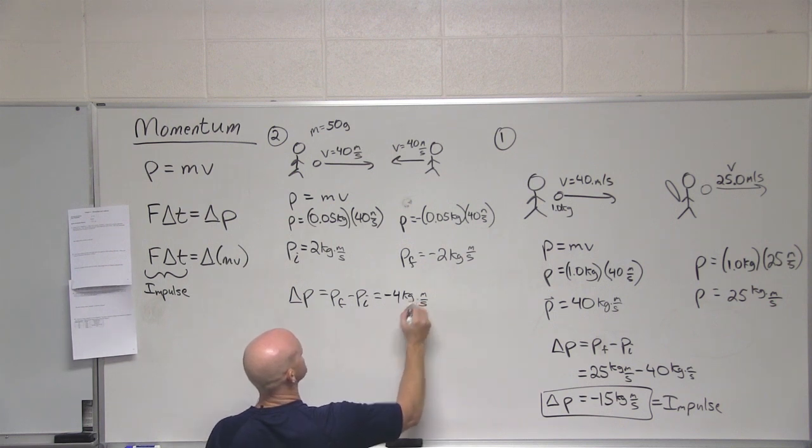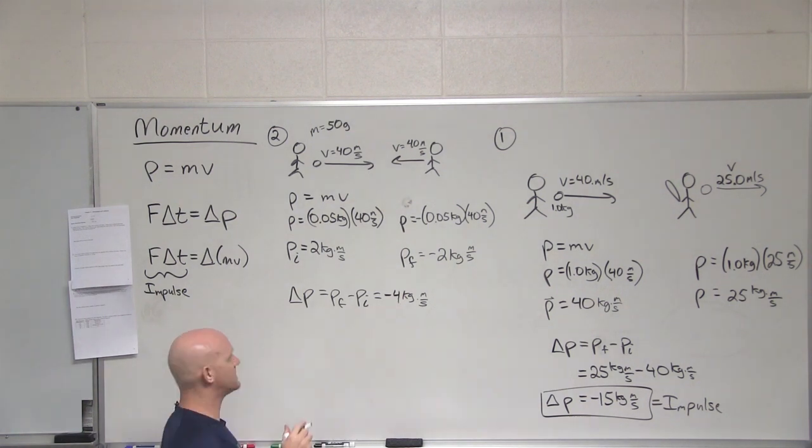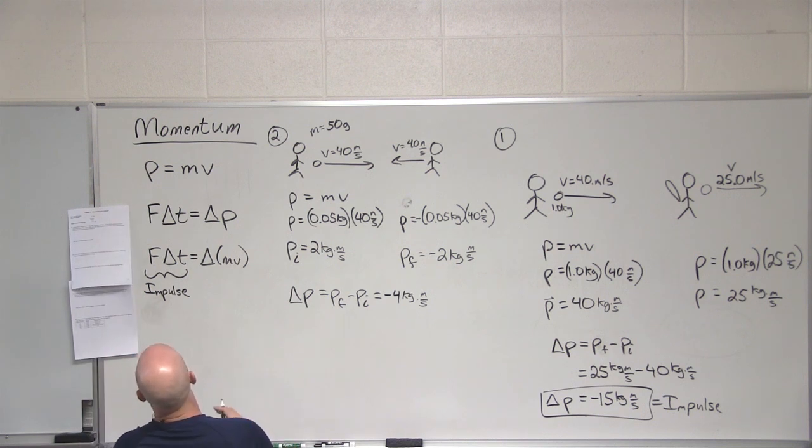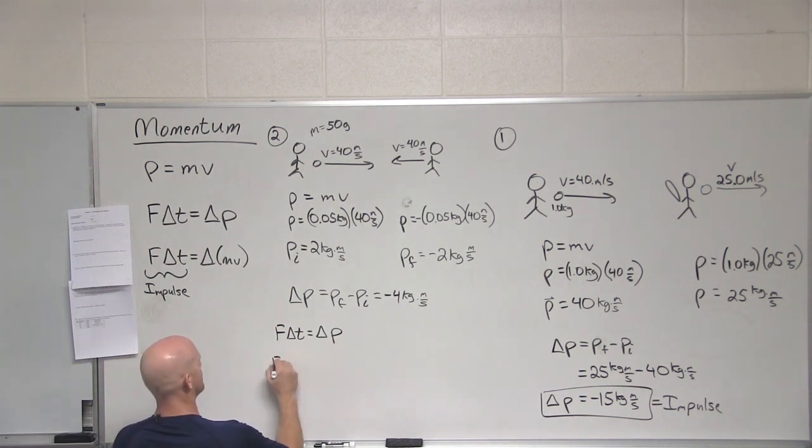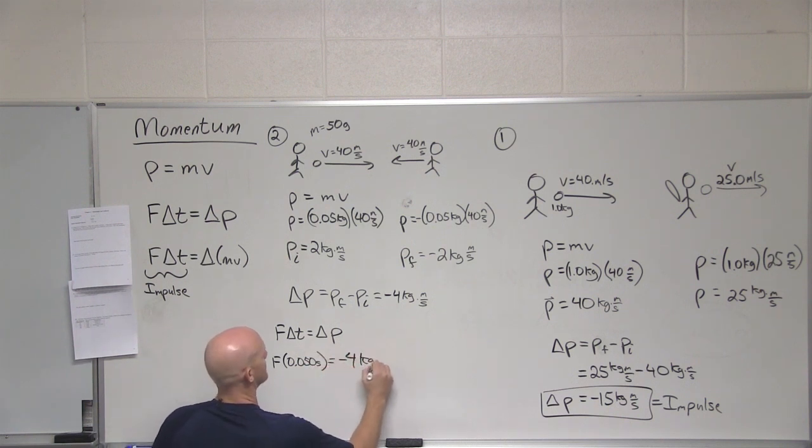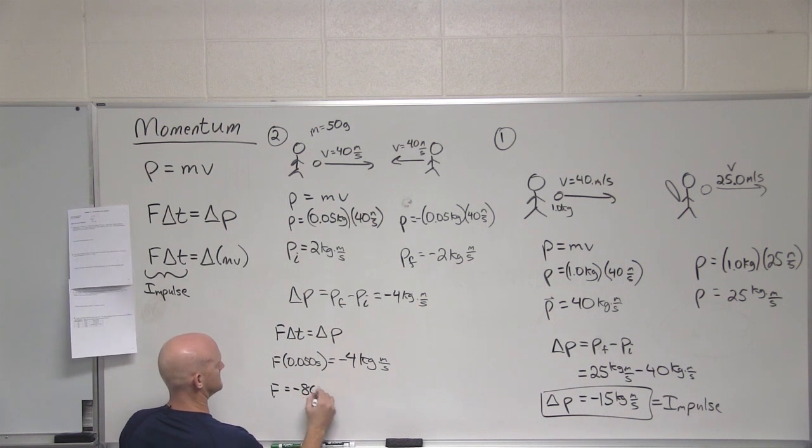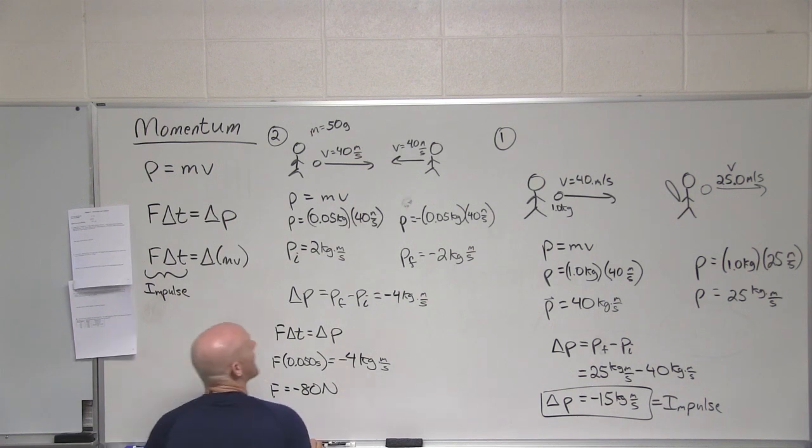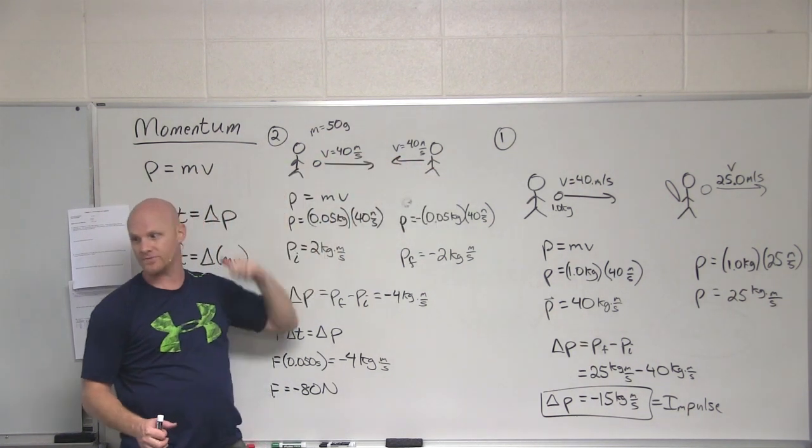That's our change in momentum, and since that's our change in momentum, that's also our impulse. And so in this case, the second half of this question says, if the ball is in contact with the racket for 0.050 seconds, what average force was applied to the tennis ball? So here, we'll have FΔt equals Δp. And so in this case, F times 0.050 seconds equals negative four kilogram meters per second. What do we get for a force there? Negative 80. Negative 80 what? Awesome. Why is it negative? Because it changed the direction. So yeah, we, in this case, as it's drawn on the board, we define to the right as positive, to the left is negative, and the force his racket applied to the ball is definitely to the left, which we made negative. Great.